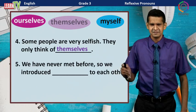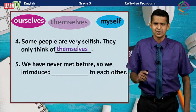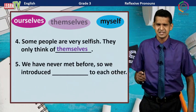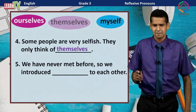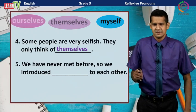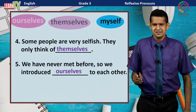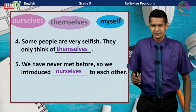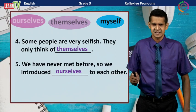This is the fifth one. We have never met before, so we introduce ___ to each other. The answer is 'ourselves.' We introduce ourselves. Here, the object is the same as the subject.